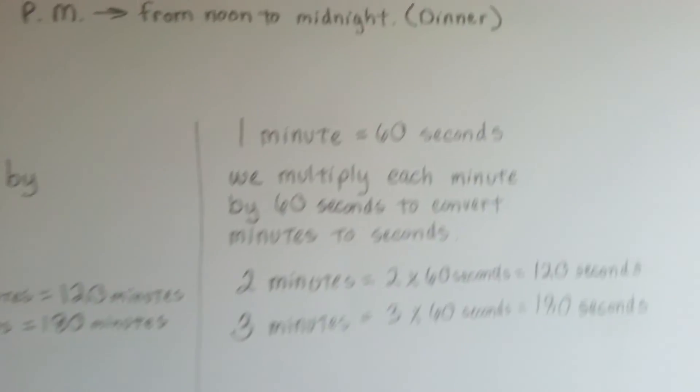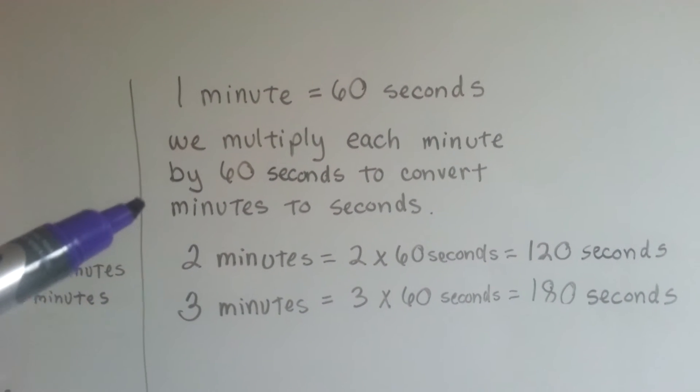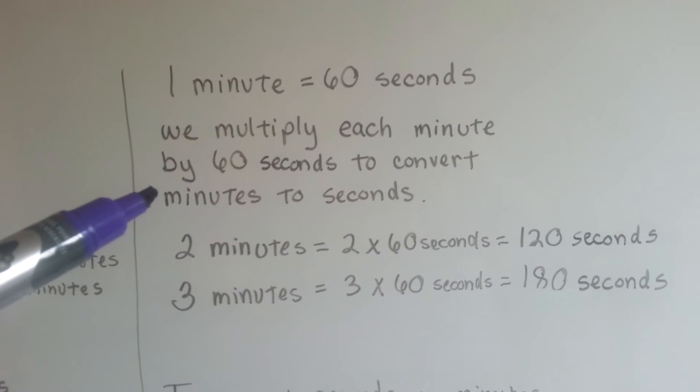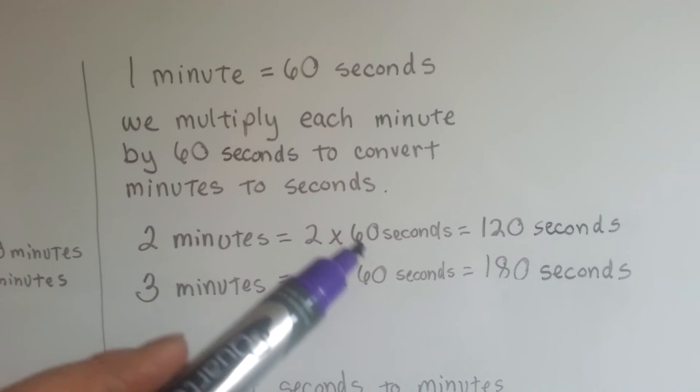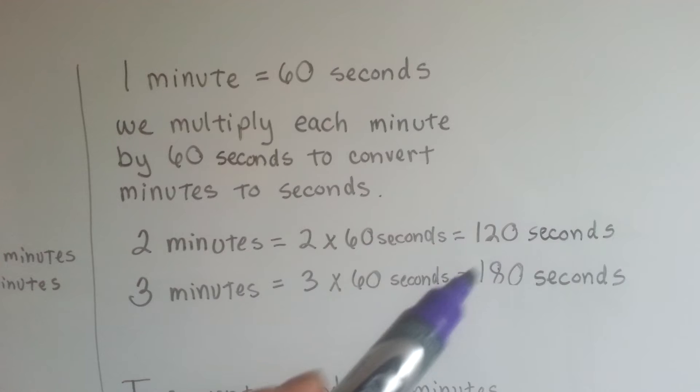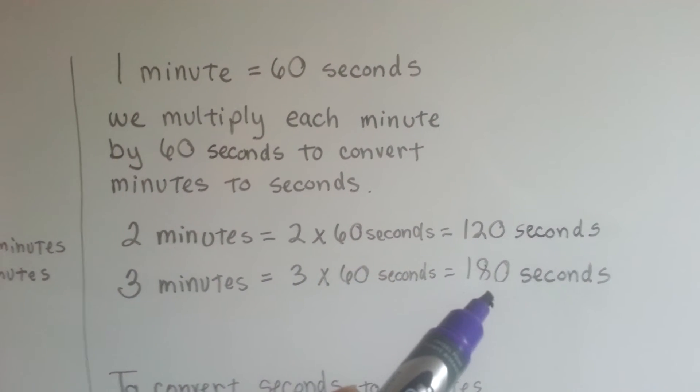Same thing with a minute to seconds. Because there's 1 minute for 60 seconds, we multiply each minute by 60 seconds to convert minutes to seconds. 2 minutes would be 2 times 60 seconds, which would be 120 seconds. 3 minutes would be 3 times 60 seconds, or 180 seconds.